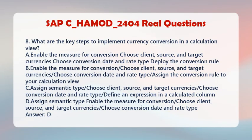Question 8: What are the key steps to implement currency conversion in a calculation view? A. Enable the measure for conversion; choose client, source, and target currencies; choose conversion date and rate type; deploy the conversion rule. D. Assign semantic type; enable the measure for conversion; choose client, source, and target currencies; choose conversion date and rate type. Answer: D.